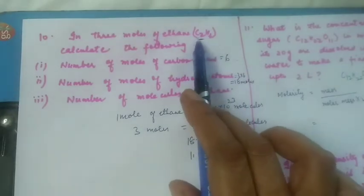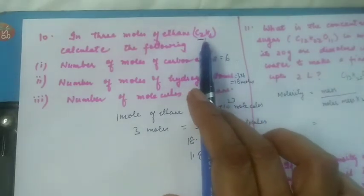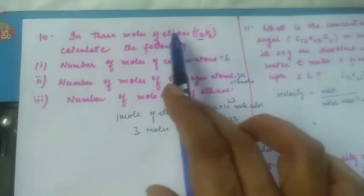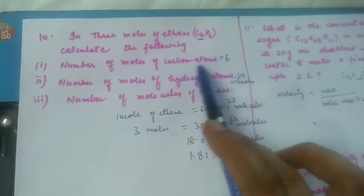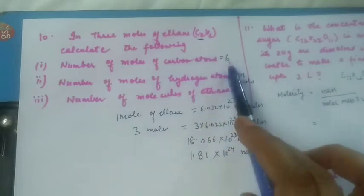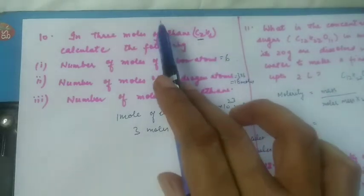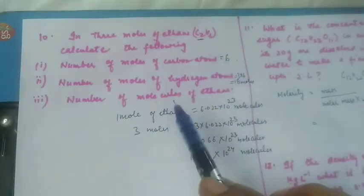In the formula C₂H₆, in one mole there are two moles of carbon. So in three moles of ethane, the number of moles of carbon atoms will be two into three, that is six.